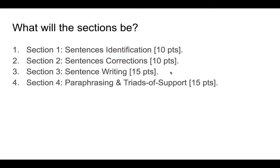Section four will be paraphrasing and triads of support — a chance to show your skills at taking a piece of work from an original document and putting it into your own words, with the correct alignment of triads. A triad of support consists of three sentences: the concept sentence, which introduces the main idea; the citation sentence, done with proper APA formatting using either an integral or non-integral citation; and the analysis sentence, where you analyze the concept and citation.